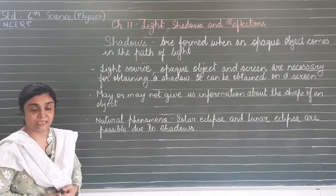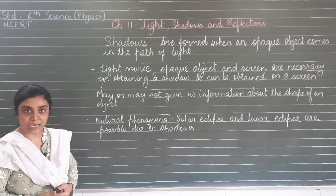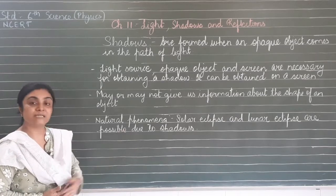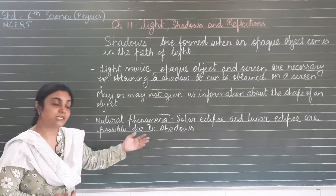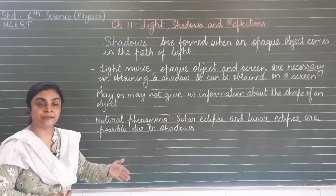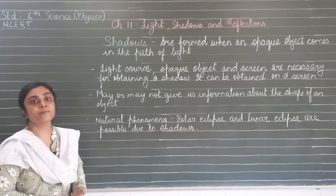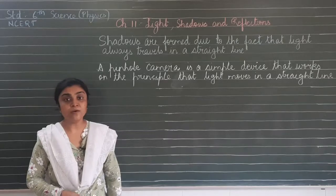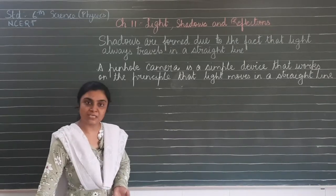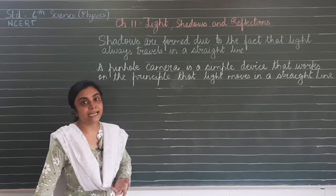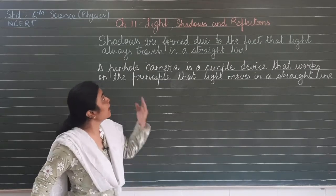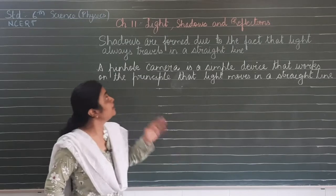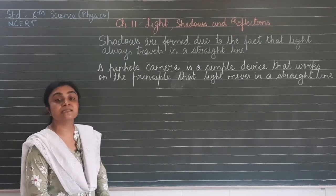We have seen natural phenomena like solar eclipse and lunar eclipse. These two types of natural phenomena are possible because of shadows. Solar eclipse and lunar eclipse are phenomena which are results of shadows.